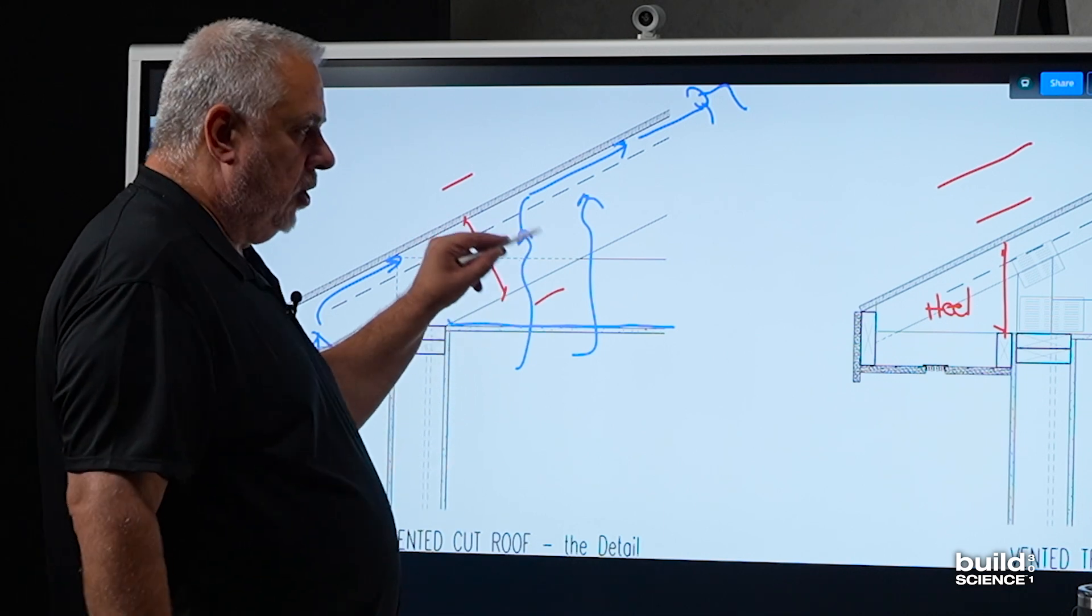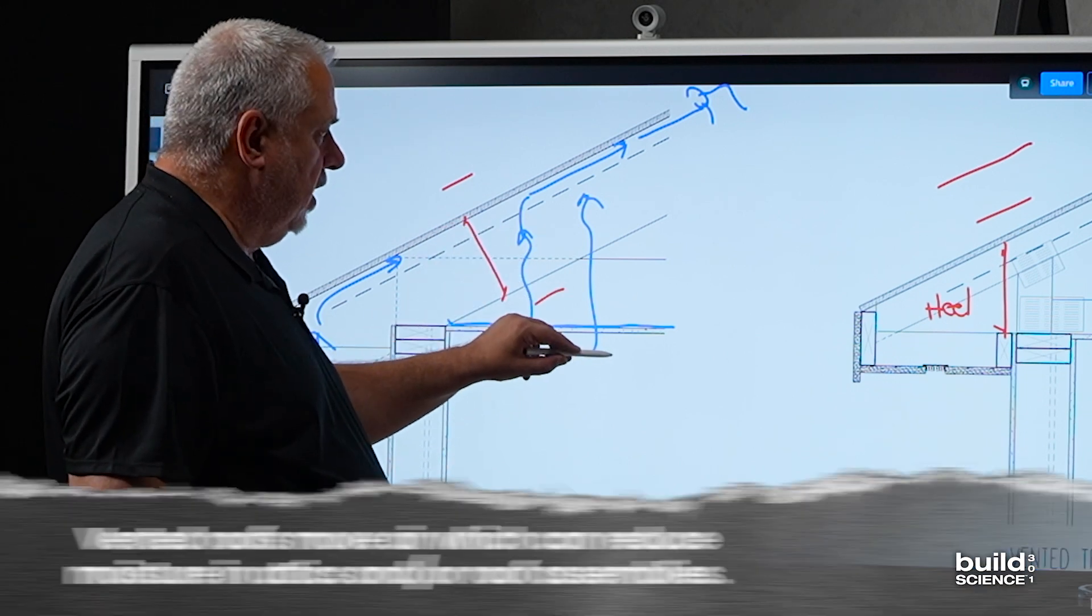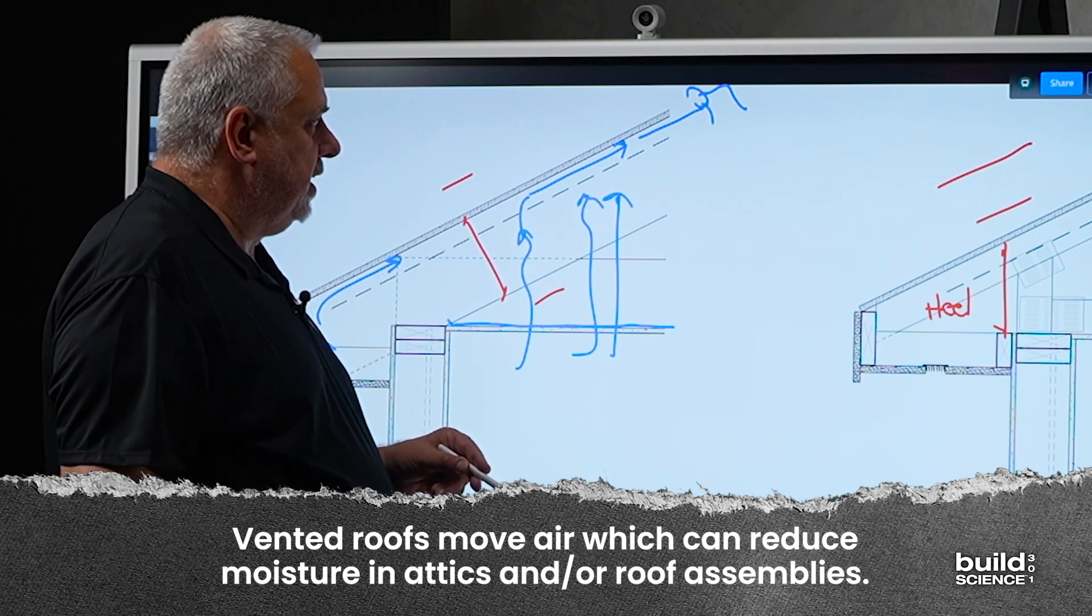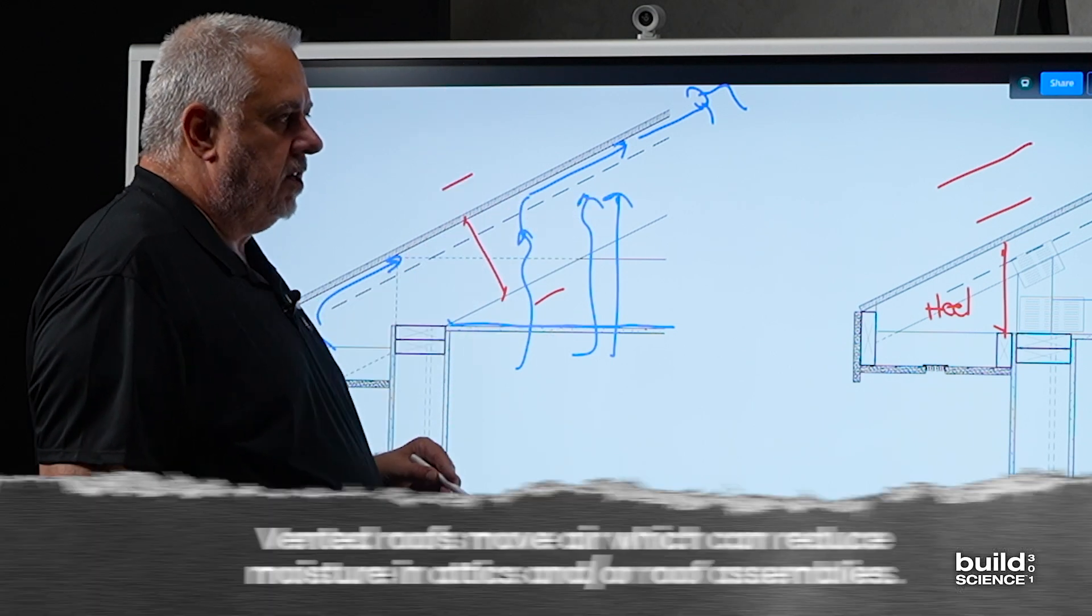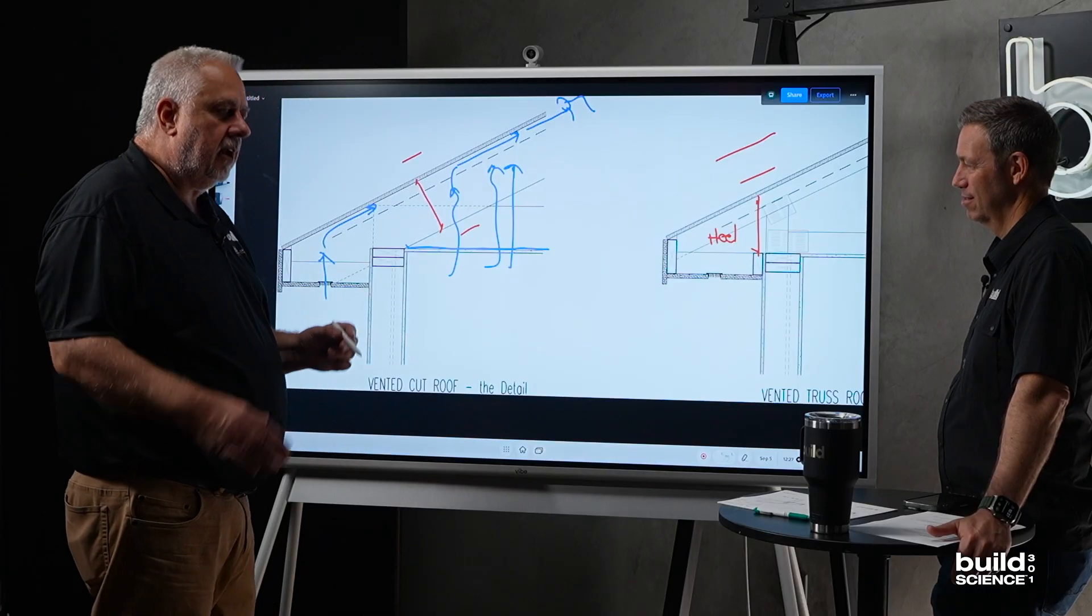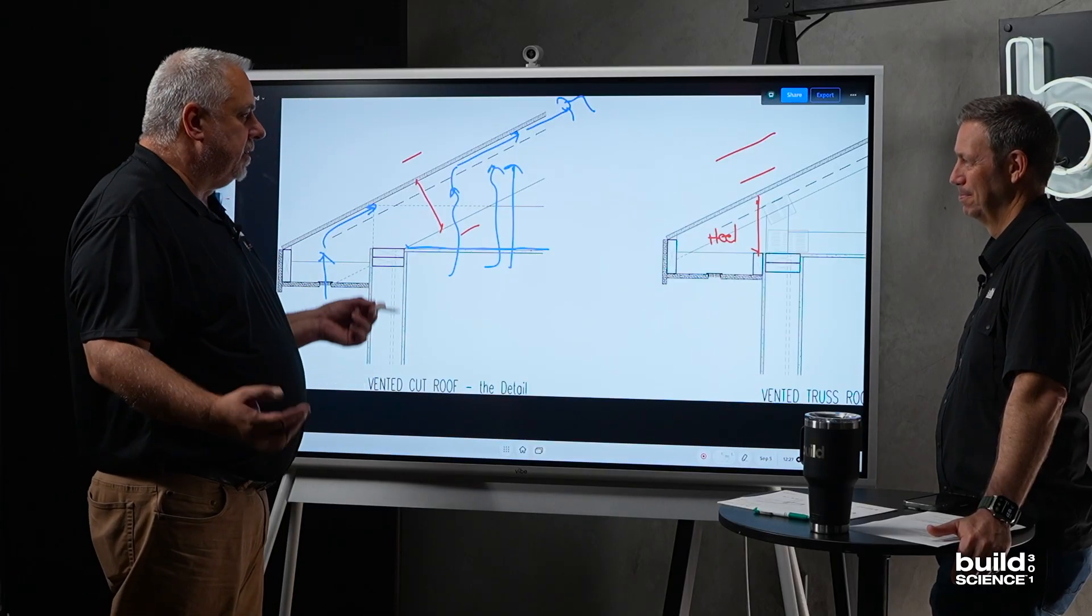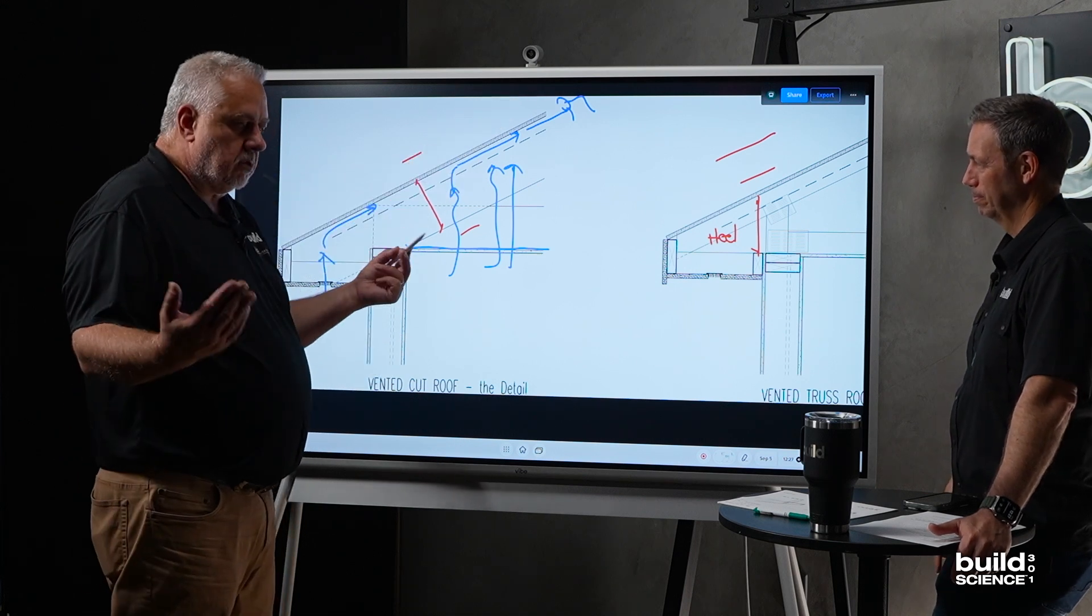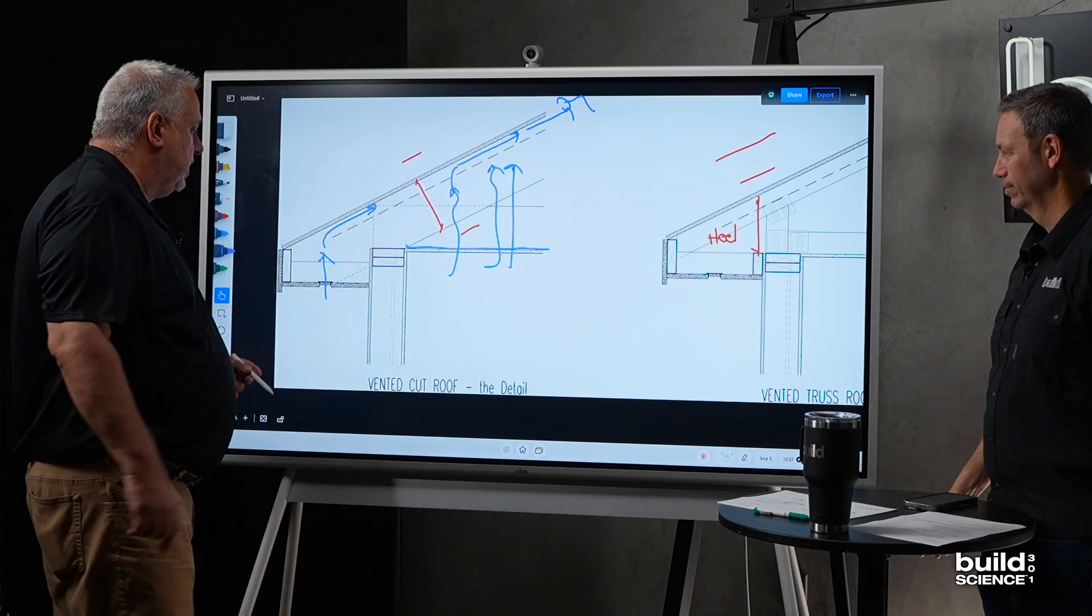I said, the whole purpose of a vented roof is so moisture can go up into the attic and out the ridge vent. No, we always put a piece of poly. I said, I don't care what you do, but the logic of a vented roof is moisture in, moisture out. So that's the whole purpose of a vented roof.